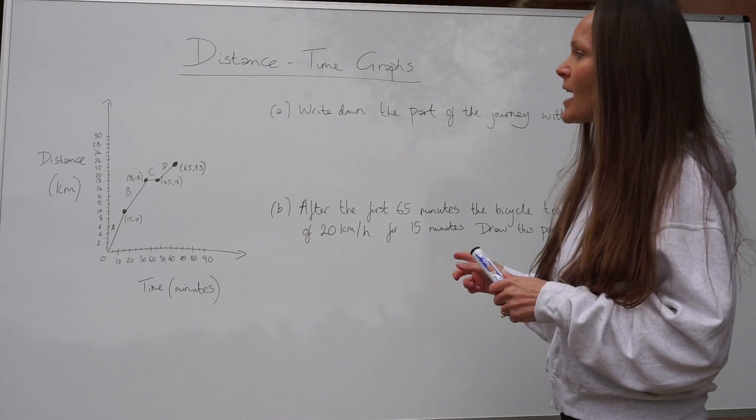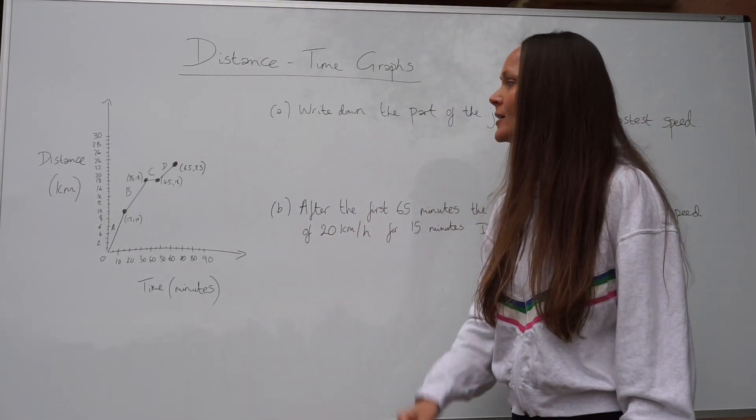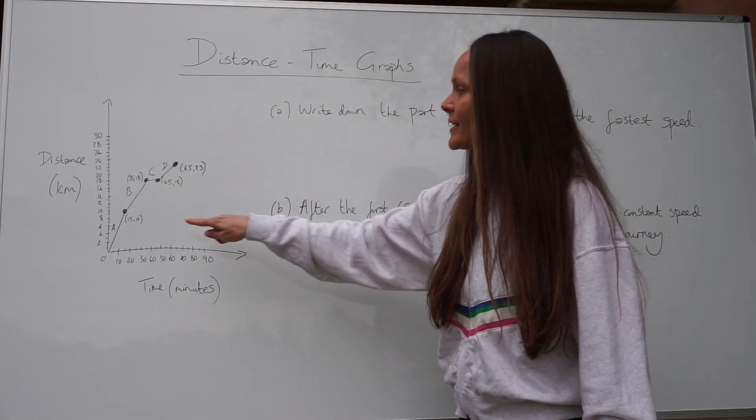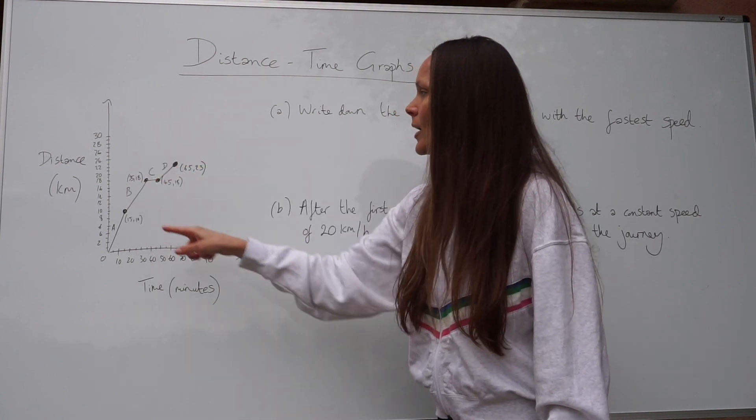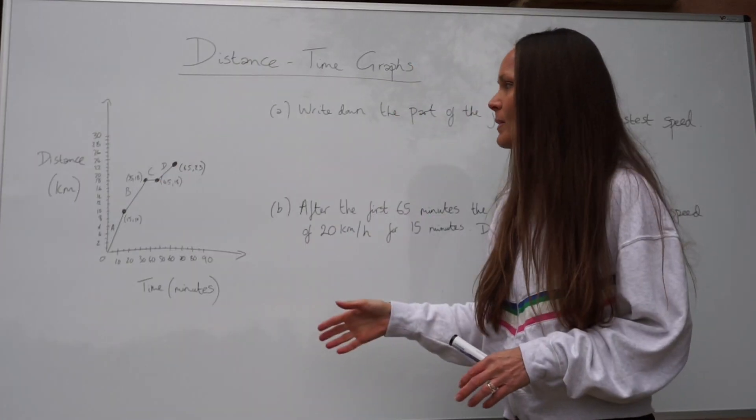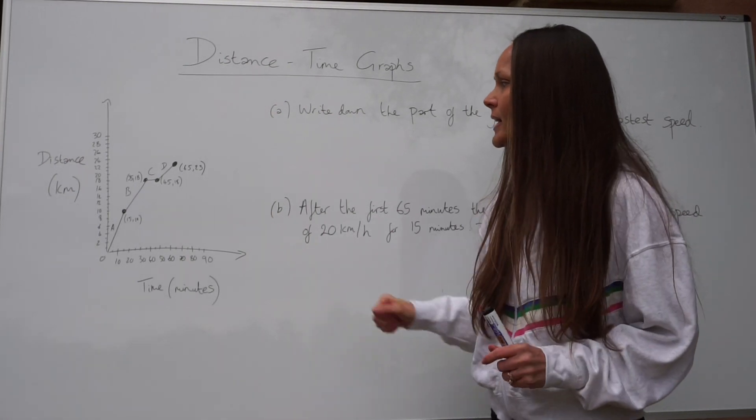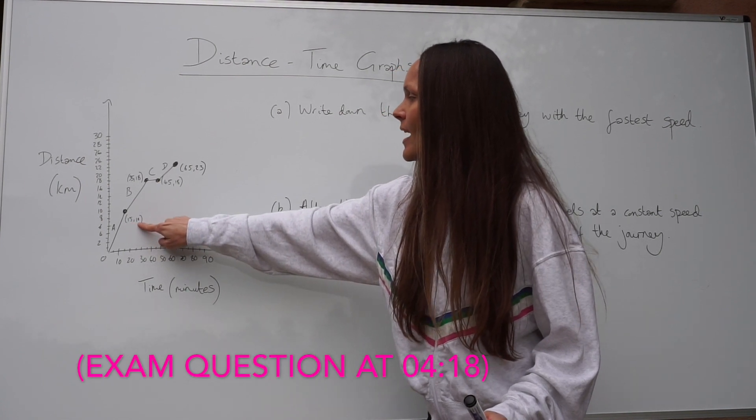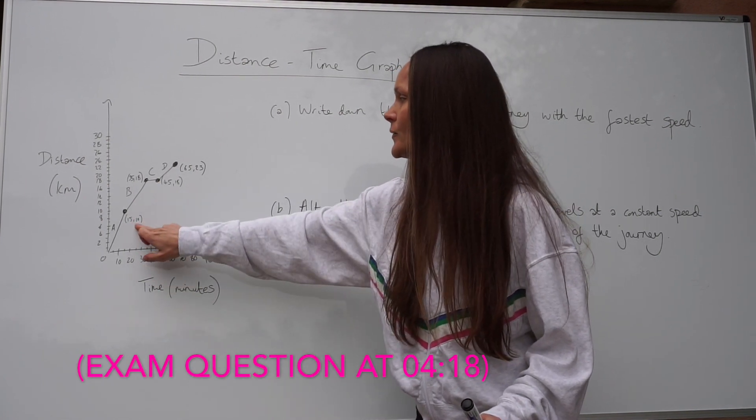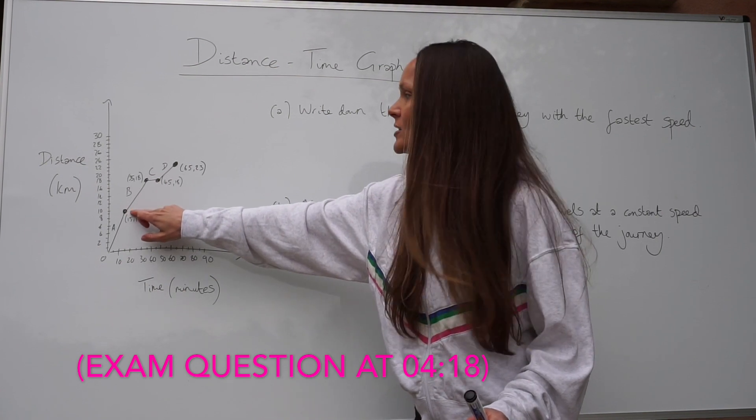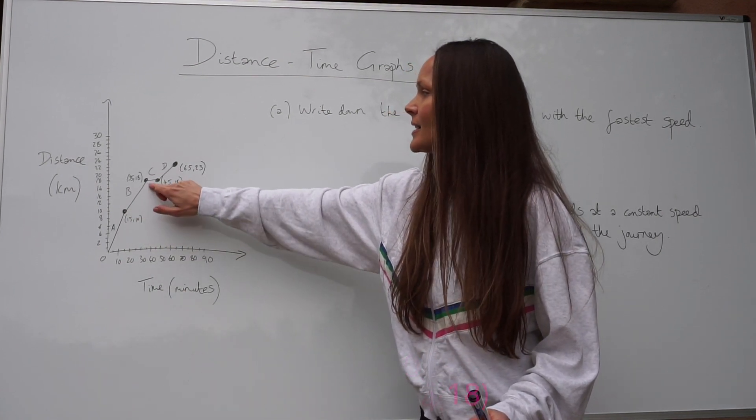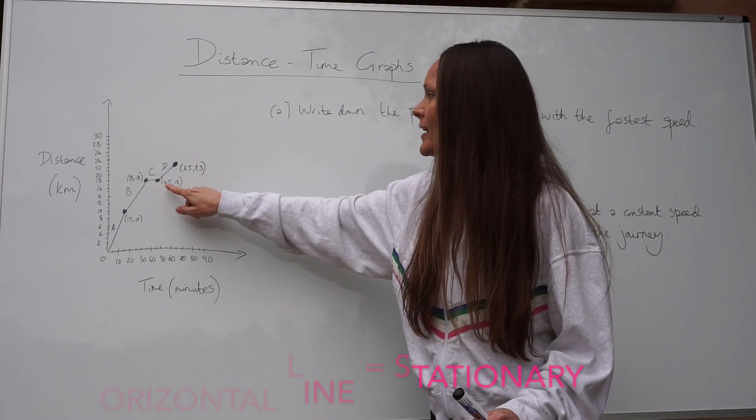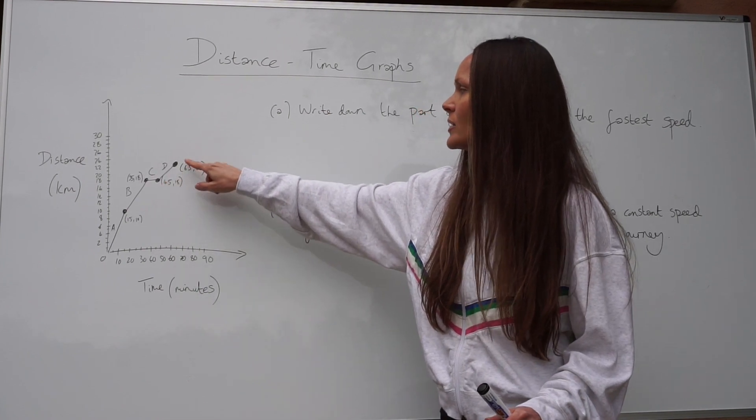In this second exam question, we have a distance time graph for the journey of a bicycle. Now, just before we have a look at the questions, I just want to show you this graph. I've indicated just the most important points on the whiteboard because I don't have squares on my board. It's quite difficult for me to draw an accurate diagram here. So the bicycle travels section A, and then it stops at 15.10. So after 15 minutes and 10 kilometers, the bicycle changes speed during section B. Then at C, remember, it's horizontal. So that means the bicycle is stationary. And then at 45 minutes, the bicycle continues on its journey.